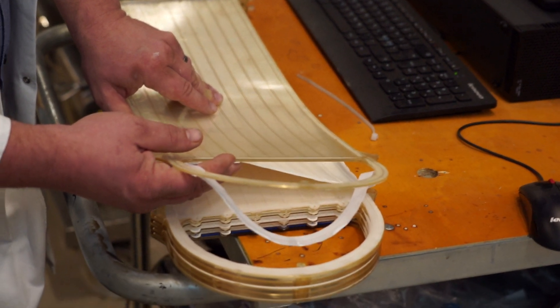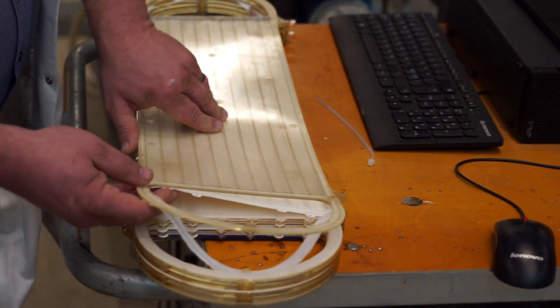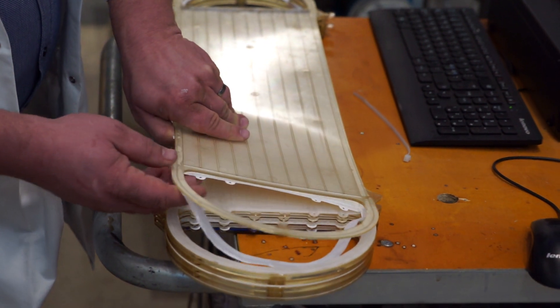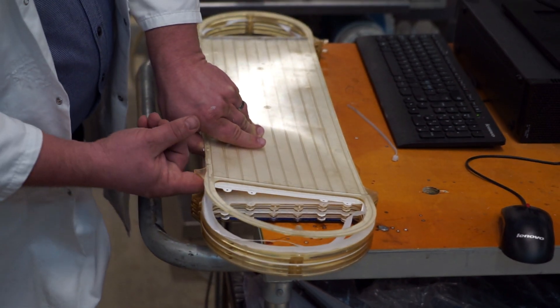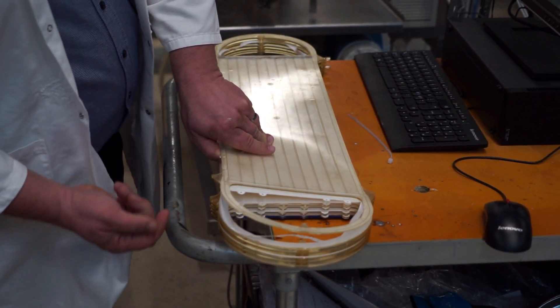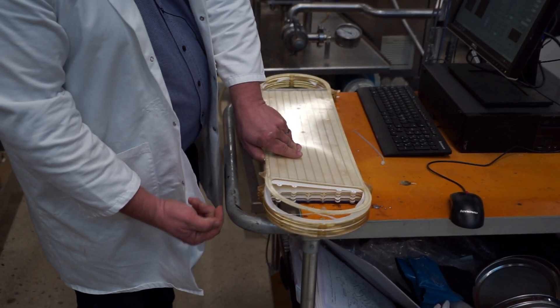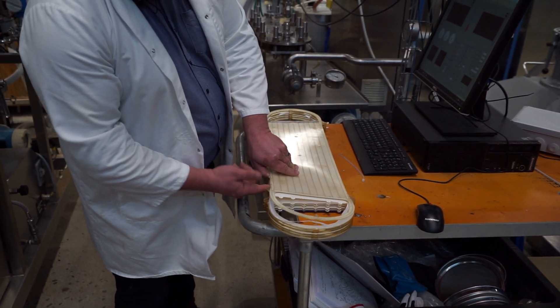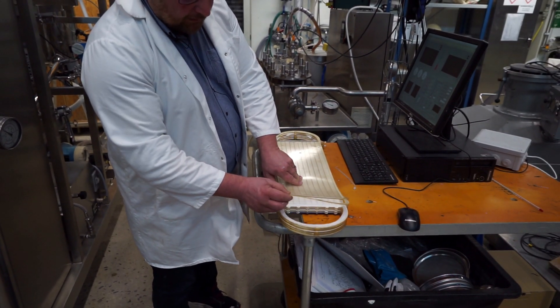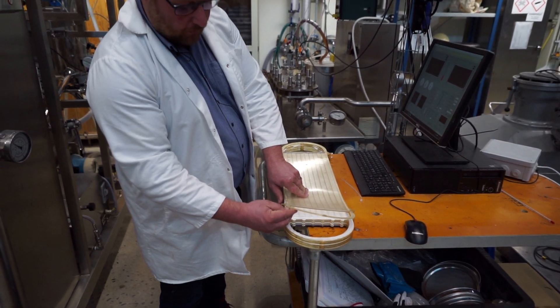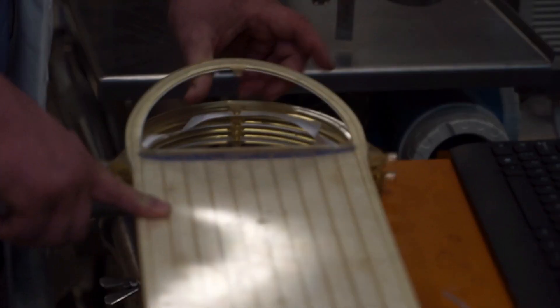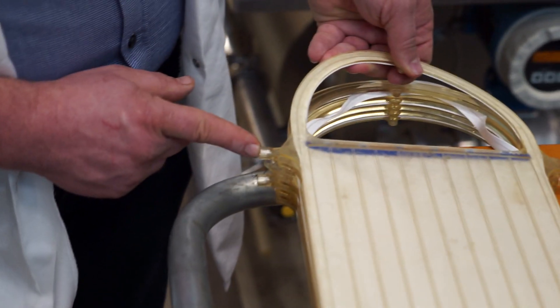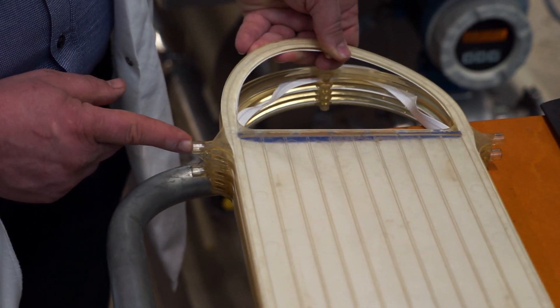So the pure liquid comes out somewhere, and the incoming feed comes in somewhere else. Exactly. The feed comes in through the end here, goes between the membranes. The solution that goes through the membrane goes into this plate. These plates are actually hollow. It's collected in these plates and sent out through this little hole here. This is where it collects.